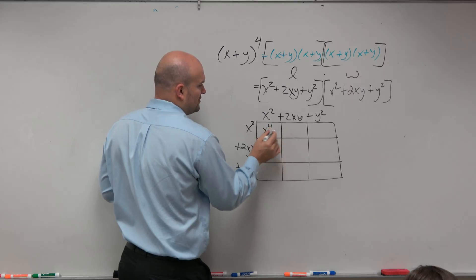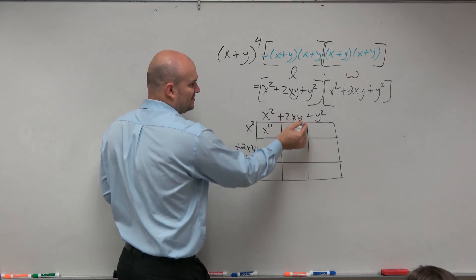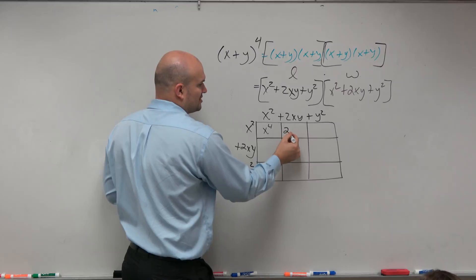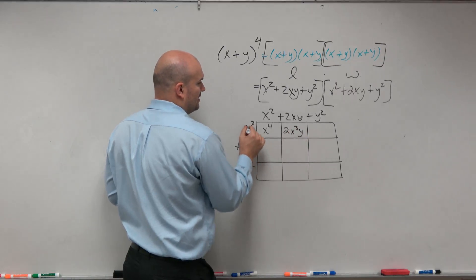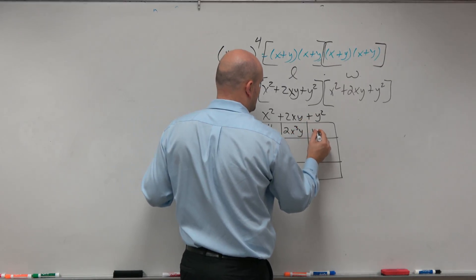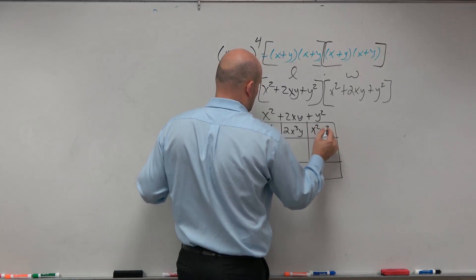Alright, so x squared times x squared is x to the fourth. So then all you're doing is length and width for each box. So x squared times 2xy is going to be 2x cubed y. x squared times y squared is going to be x squared y squared.